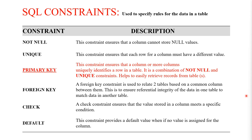In today's video we are going to learn about primary keys. Primary key is another type of SQL constraint. When primary keys are specified on a column in a table, they uniquely identify the records within that table. For that to happen, primary key constraints use a combination of the NOT NULL and UNIQUE constraints.